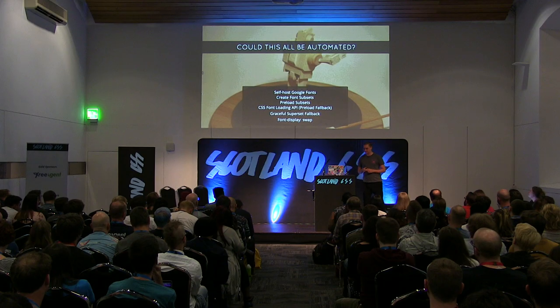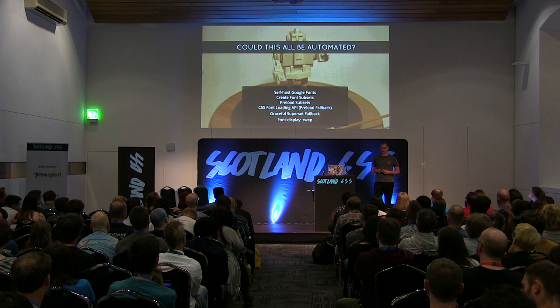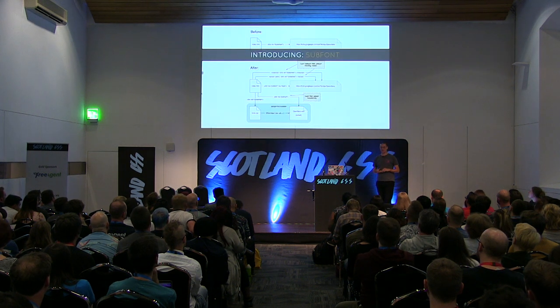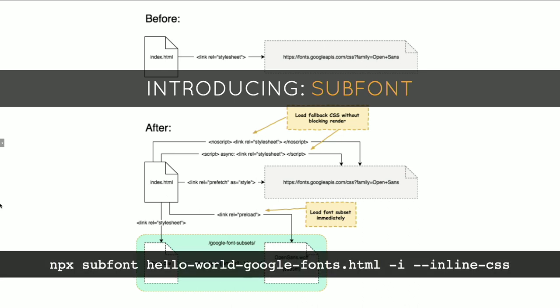So we need robots. I've spent the last one and a half years working on such a robot. I call the project Subfont — it's available on NPM. The way you use it is you run a binary, point it at an entry point of your website — in this case hello world Google fonts — and tell it dash-I to replace the content in your build output. Then tell it to inline the CSS. This means there has to be an actual HTML page with actual content so it can do a static analysis.